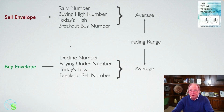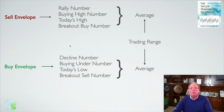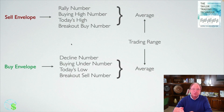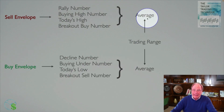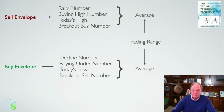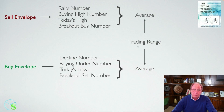So here we have calculations of the buy envelope and the sell envelope for the following day, based on the average range of the previous three days' price movements. The sell envelope, the buy envelope, and the difference between these two is our trading range. You can see how these numbers are calculated and how we use them to discern what the trading range of the following day is going to be.